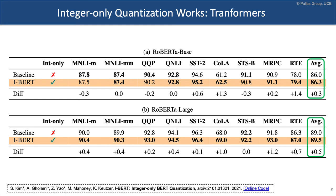We also got very good results for other neural networks, including transformers. The key idea here is to use integer-only arithmetic for nonlinear operations such as GELU, Softmax, and LayerNorm. LayerNorm requires square root, so we calculate square root with integer-only arithmetic, which is possible. Interestingly, when using integer-only quantization, we are actually getting better results in terms of average GLUE score, both for RoBERTa Base and RoBERTa Large.